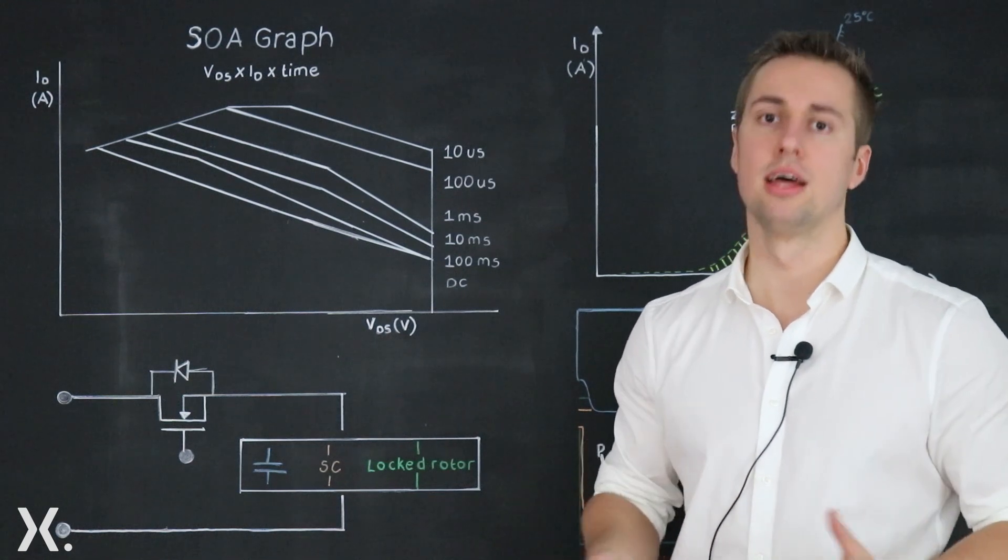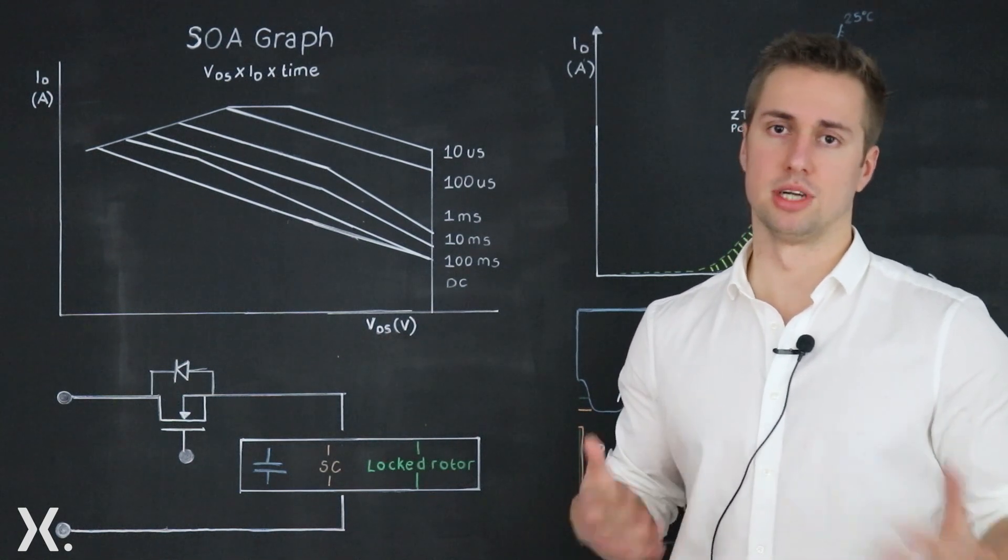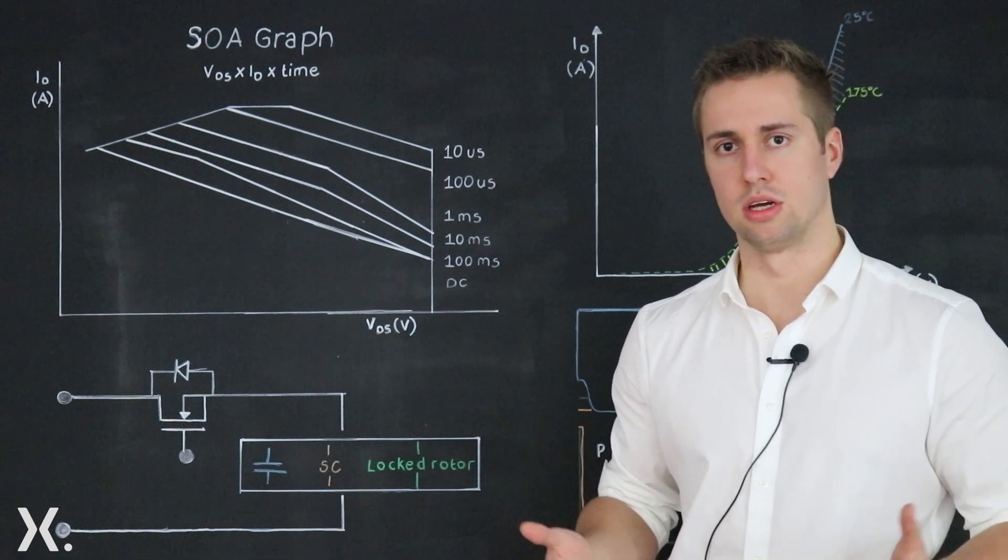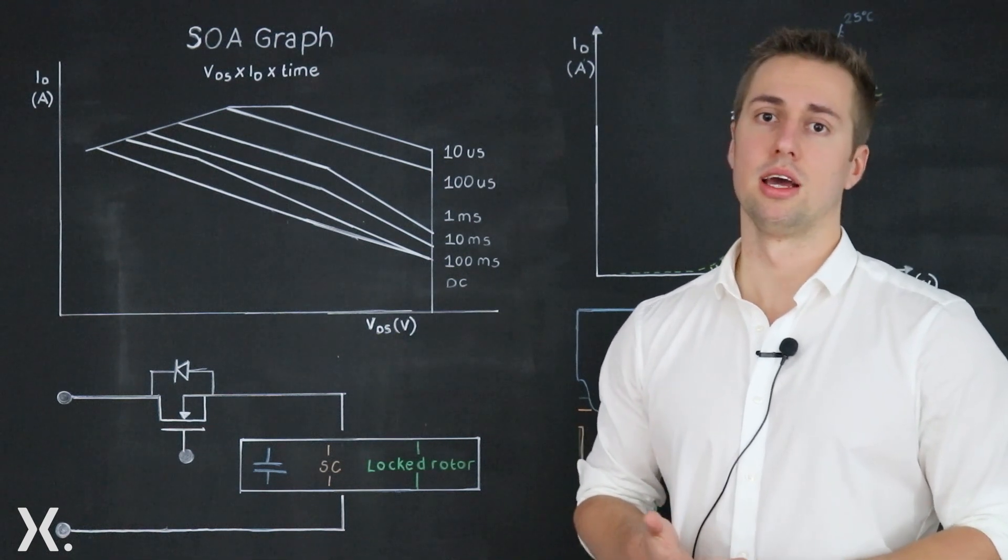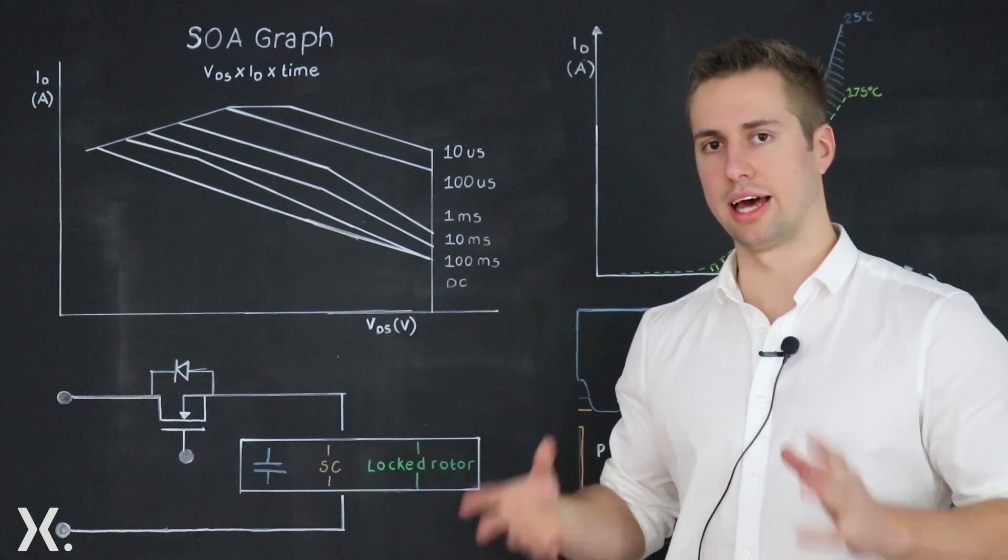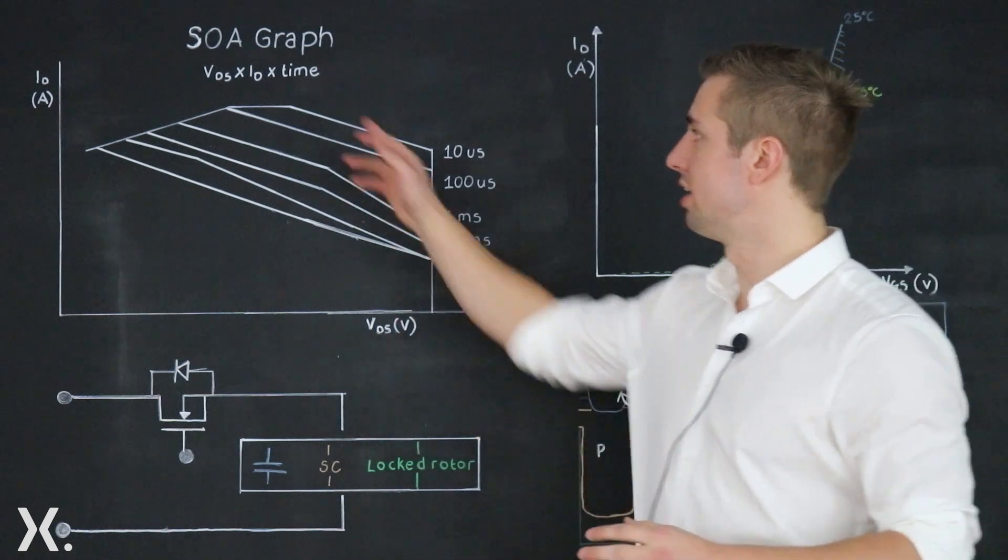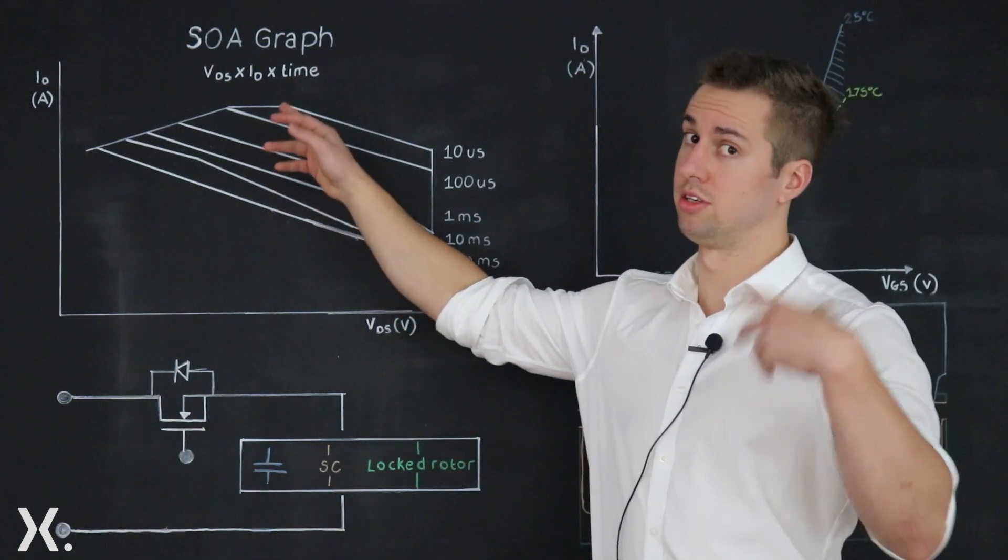So first things first, what is SOA? SOA stands for safe operating area and becomes important whenever the device is put into linear mode. The definition of SOA is the amount of power the device can handle for a certain amount of time before failing, and the power is the drain source voltage multiplied by the drain current.